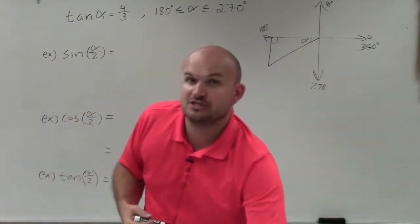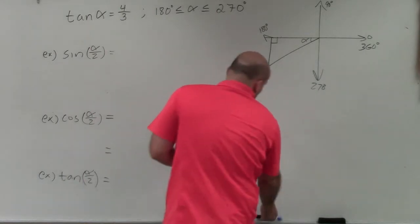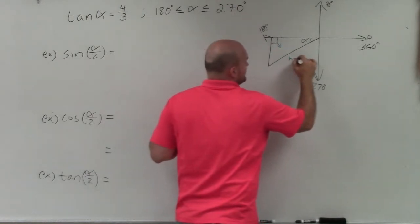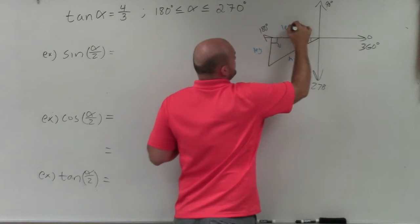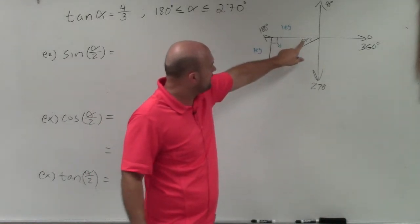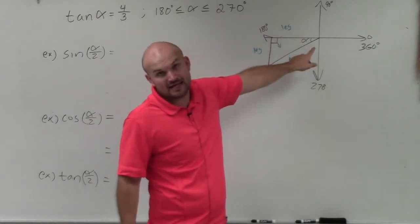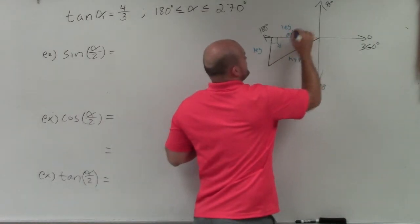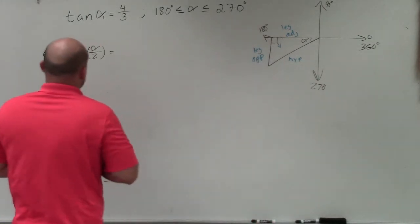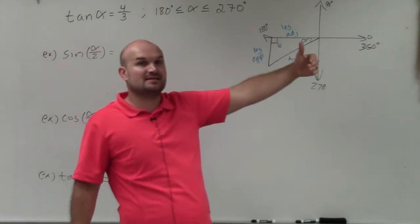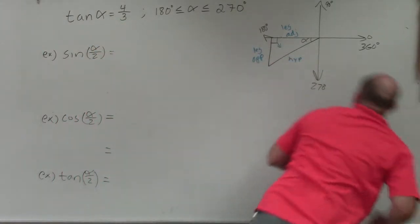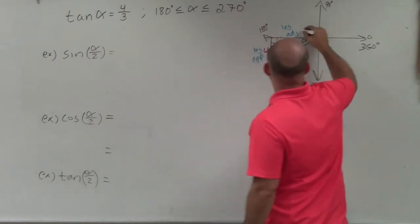Now we use our equation to fill in the sides. The hypotenuse is always directly across from the right angle. The leg between the right angle and the angle we're using is the adjacent side, and the other leg is the opposite side. Since tangent is opposite over adjacent, 4 is my opposite side and 3 is my adjacent side.